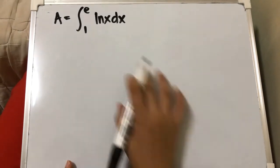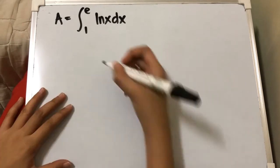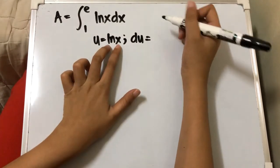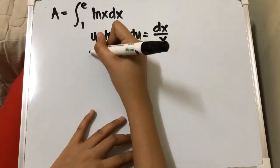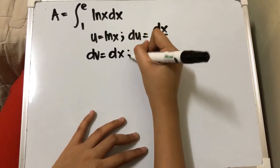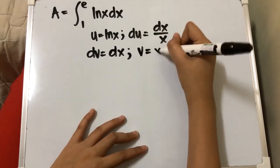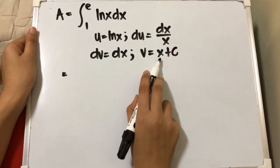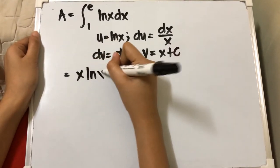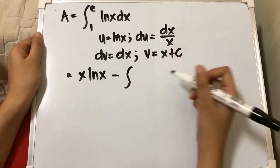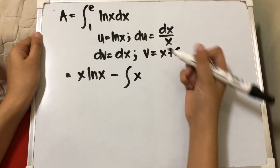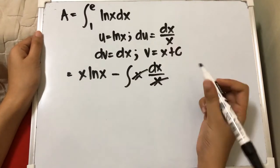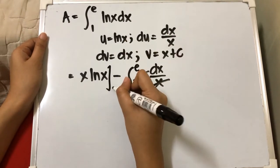In order to solve our function, we use integration by parts. Our u equals ln x and du equals dx over x. Our dv equals dx, and we know the integral of dx is x. Rewriting: x ln x minus the integral of v times du, which is x times dx over x. We can cancel x, and the limits are from 1 to e.